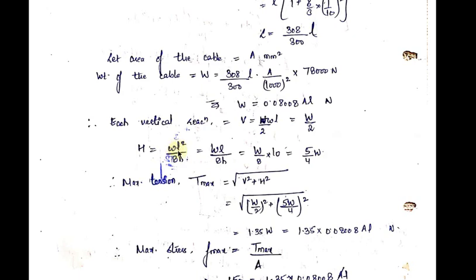The maximum tension is T_max = √(V² + H²). Substituting the values of V and H, we get T_max = 1.35 × capital W. After substituting the value of capital W (the total cable weight), we get the equation for T_max in terms of A and L.